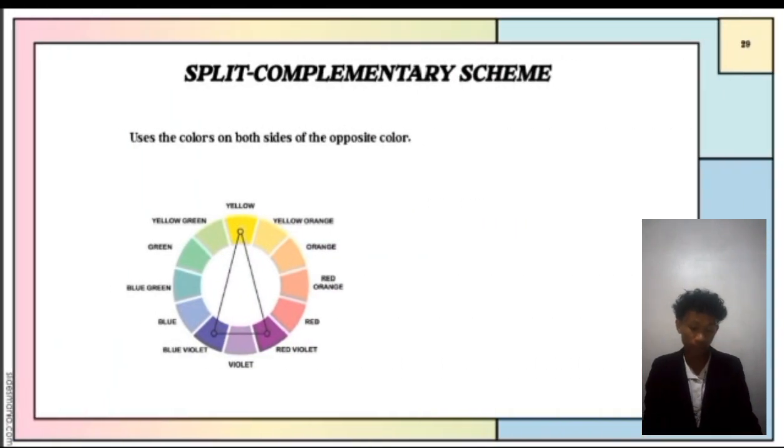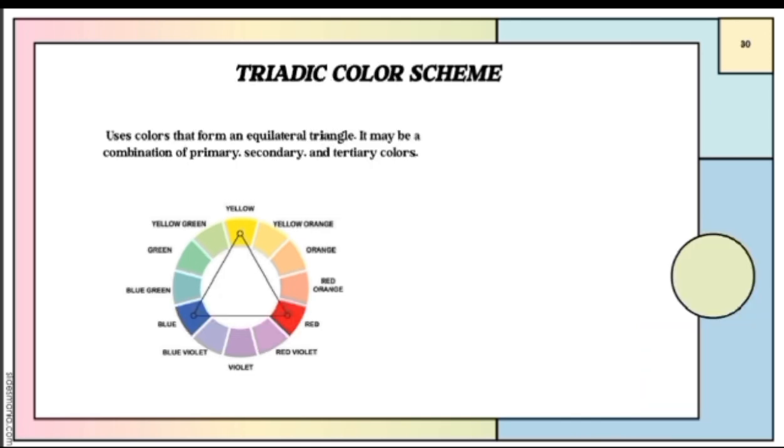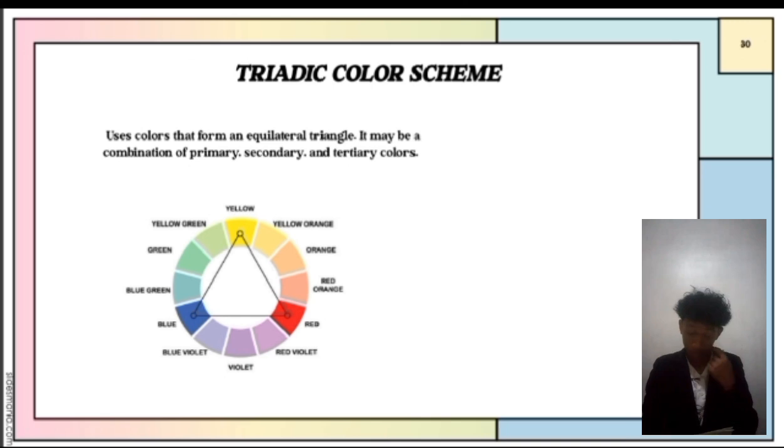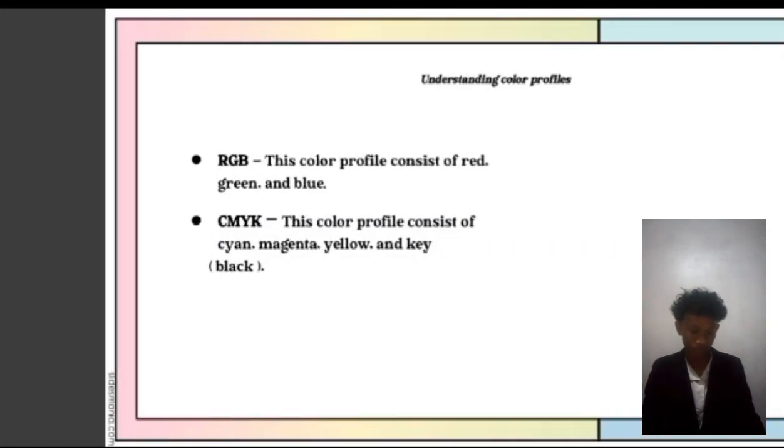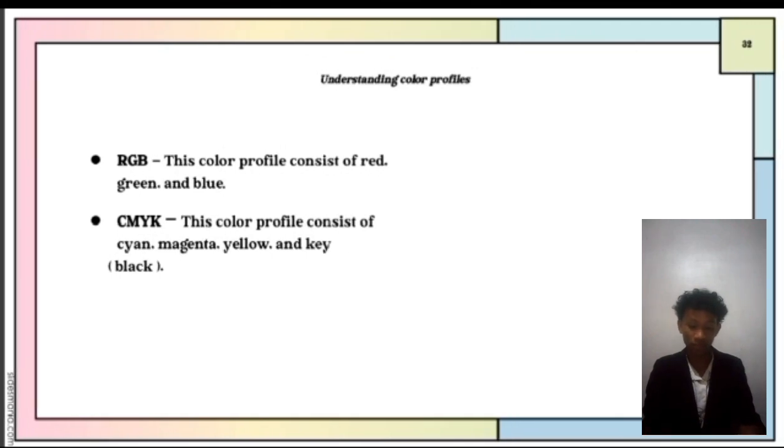Sixth, split complementary color, which uses the colors on both sides of the opposite color. Seventh, triadic color schemes. This color scheme uses colors that form an equilateral triangle. It may be a combination of primary and secondary or tertiary colors.